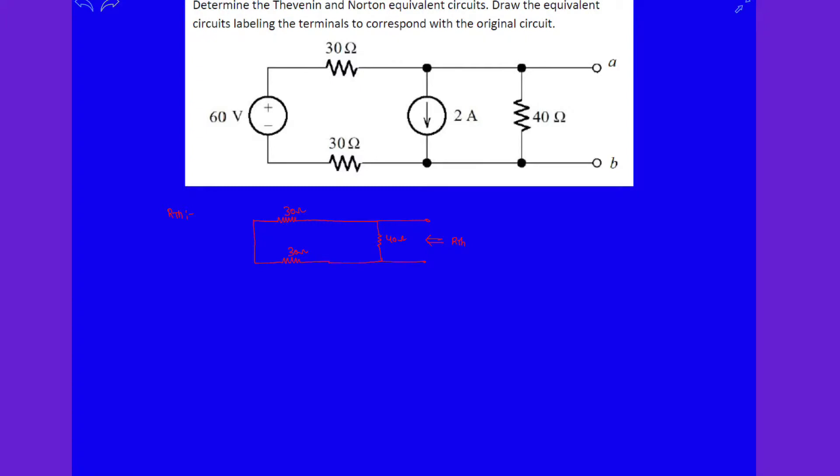So clearly 30 plus 30, this part is in parallel with 40 ohms resistance. 30 plus 30 is 60 ohms.